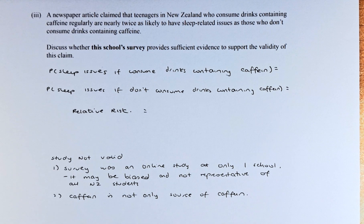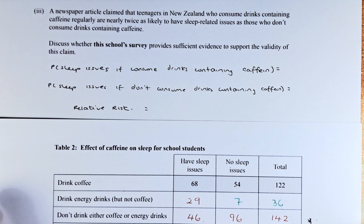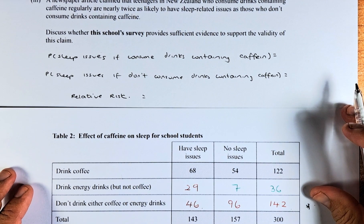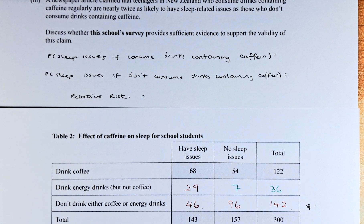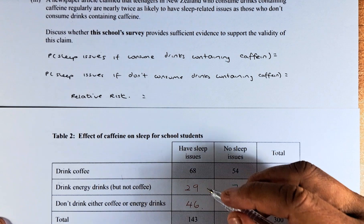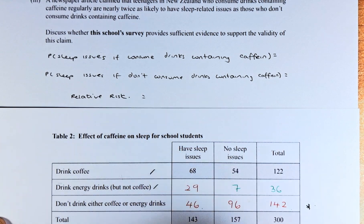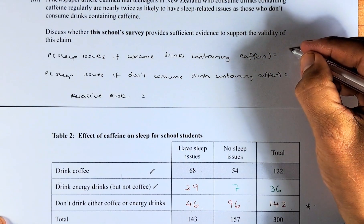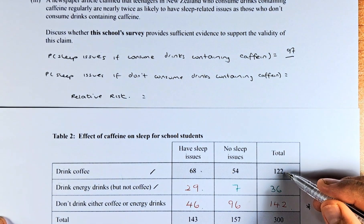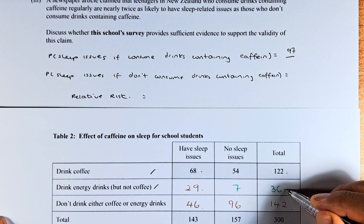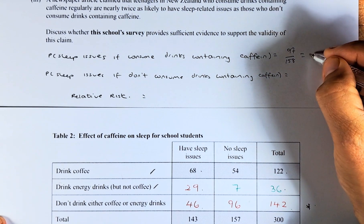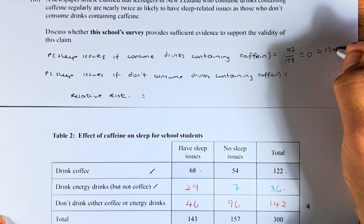Sleep issues among those who consumed drinks containing caffeine — looking at this table, the probability of sleep issues if they consume a drink containing caffeine takes students from either coffee or energy drink columns. So 68 plus 29 gives us 97, out of a total of 122 plus 36, which is 158. Putting that into the calculator, the answer is 0.6139.